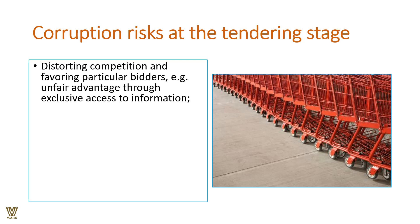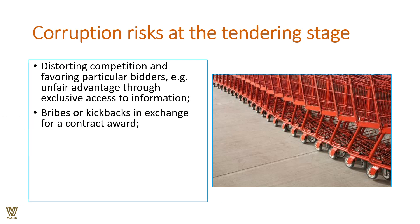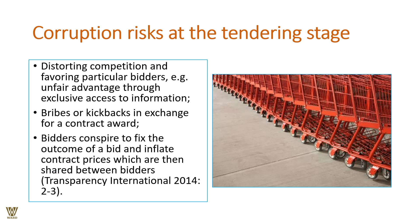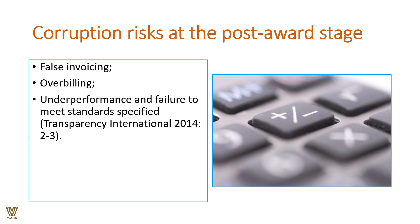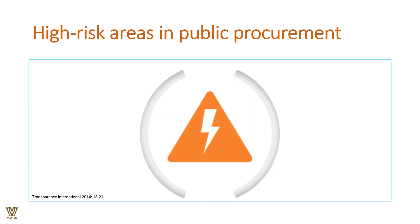At the tendering stage, corruption includes distortion of competition by favoring particular bidders — through bribery or kickbacks to reveal competitors' pricing. Bidders may also conspire to fix outcomes by colluding on their bids, which is wrong. At the post-award stage, the biggest risks include false or inflated invoicing, over-billing, under-performance, and failure to meet standards specified in the contract.